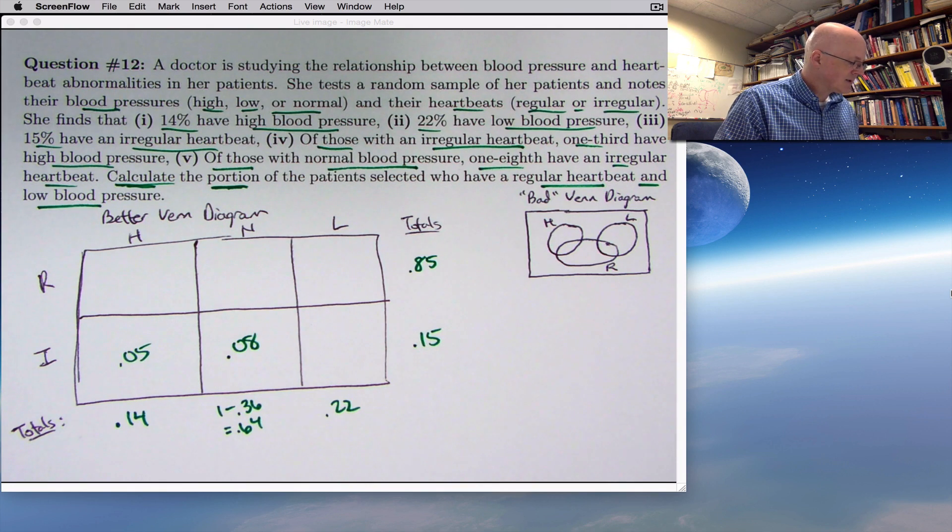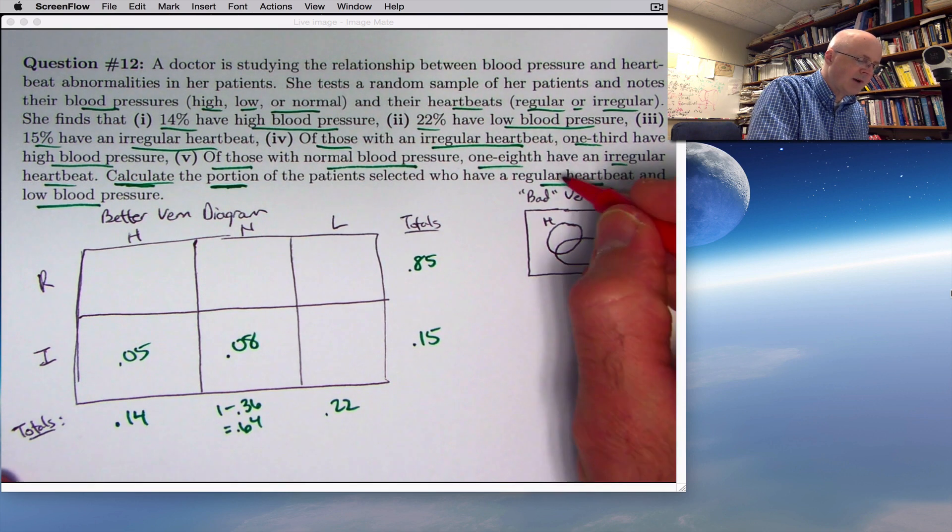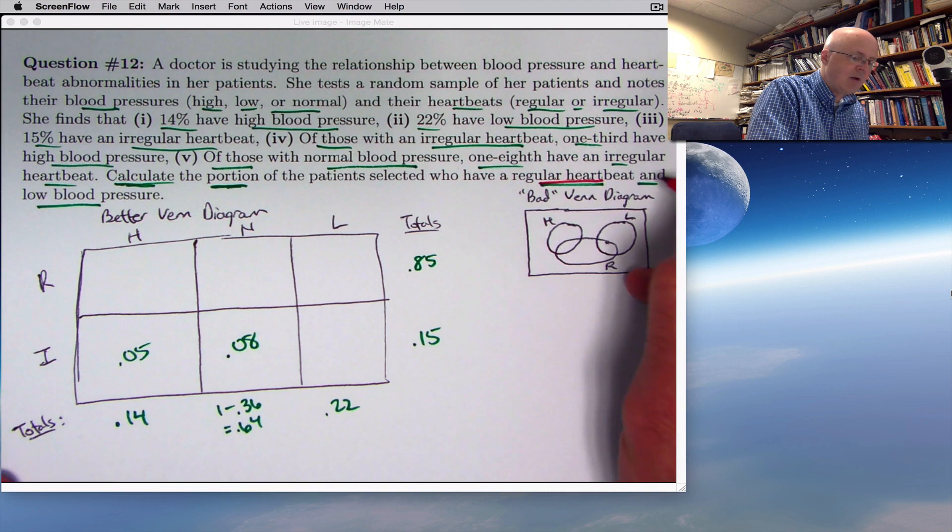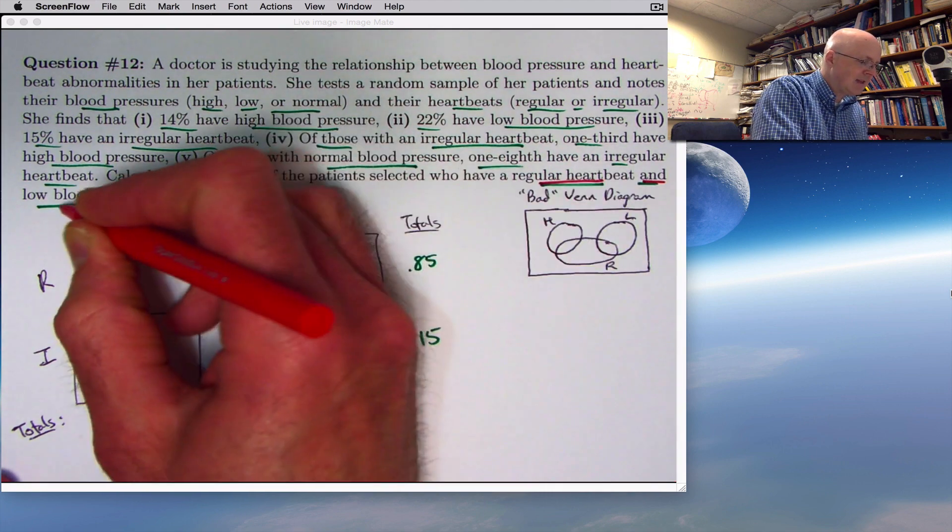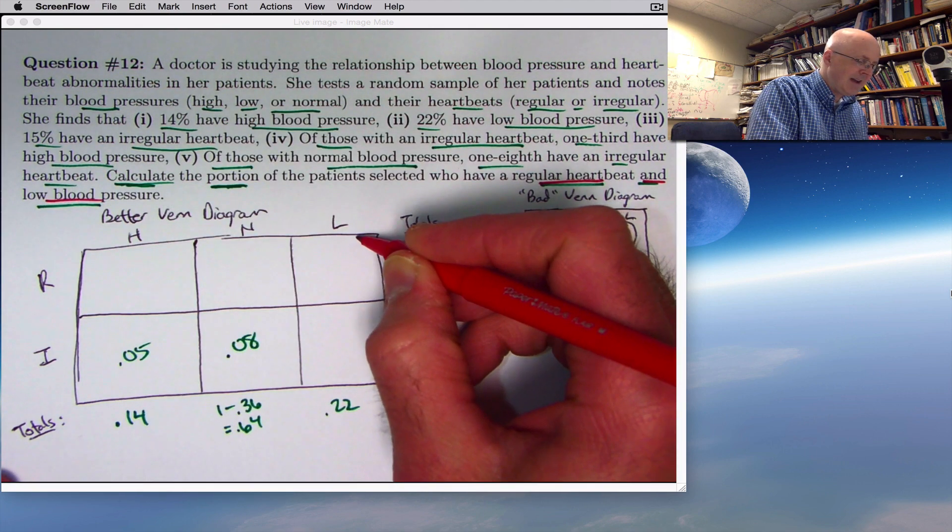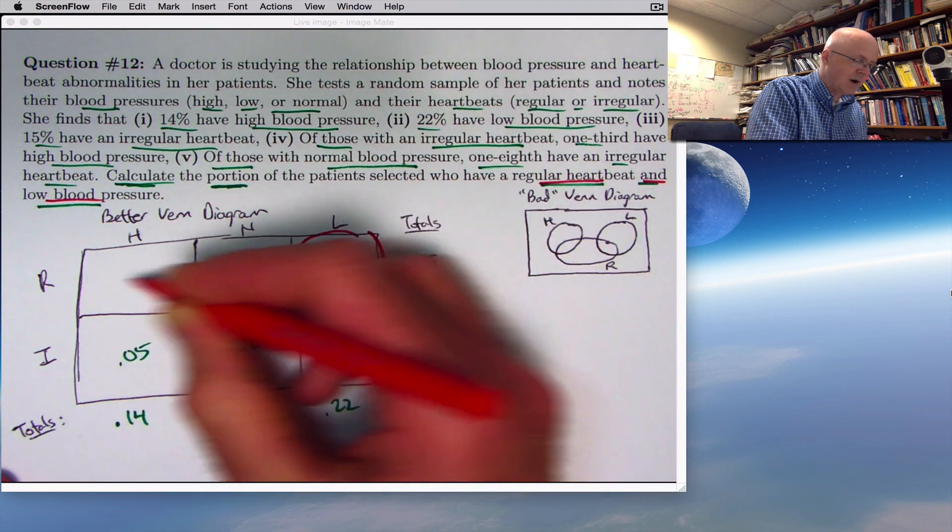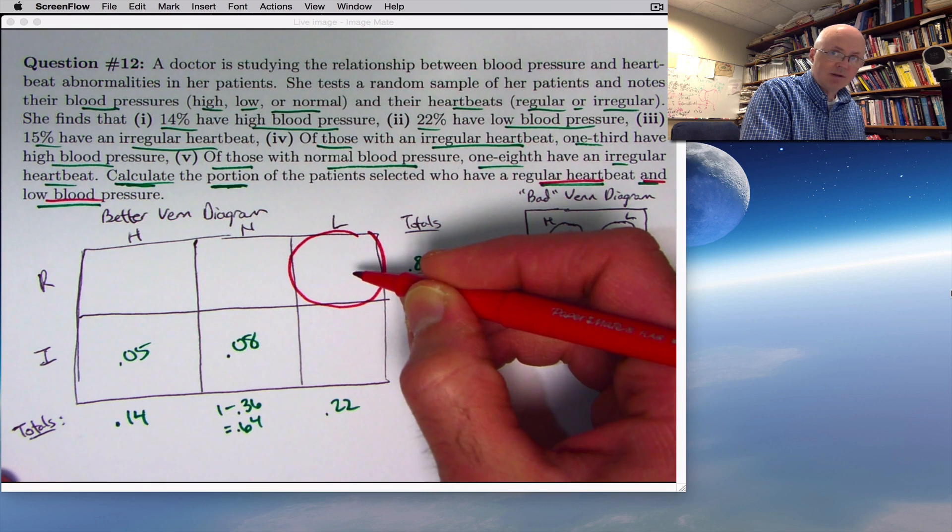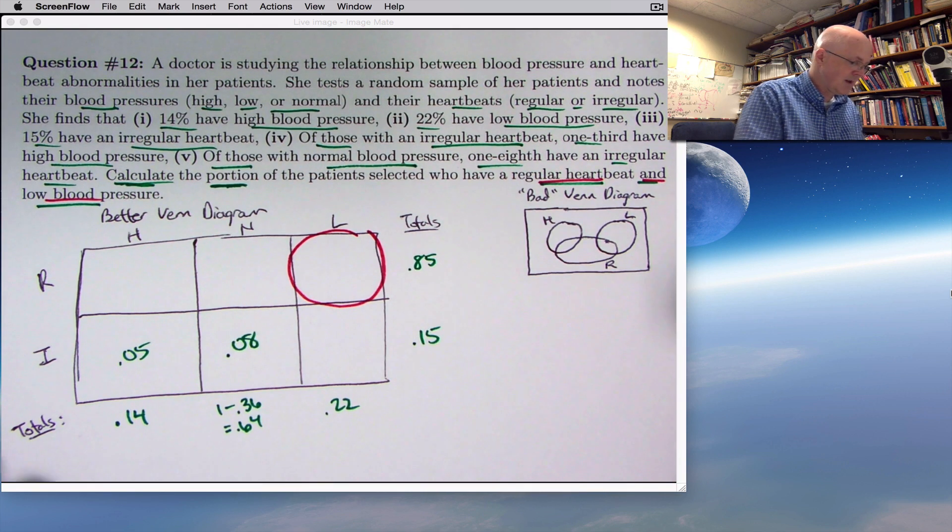Can we fill in the rest of the diagram, and is it necessary? Well, let's focus on what we want to find. We want to find the portion, percentage, or probability that somebody has a regular heartbeat and low blood pressure. If we can find the ordinary probability that goes in there, that's the answer to the question.